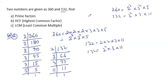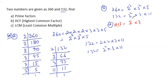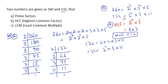That is the solution for part A. Now in part B we have to find the HCF — the highest common factor. For HCF, I write only the common numbers, which are 2 and 3, with the lower power. 2 appears with power 2 in 132 and power 3 in 360, so I take the lower power, which is 2. So HCF = 2² × 3 = 4 × 3 = 12. The HCF of 360 and 132 is 12.